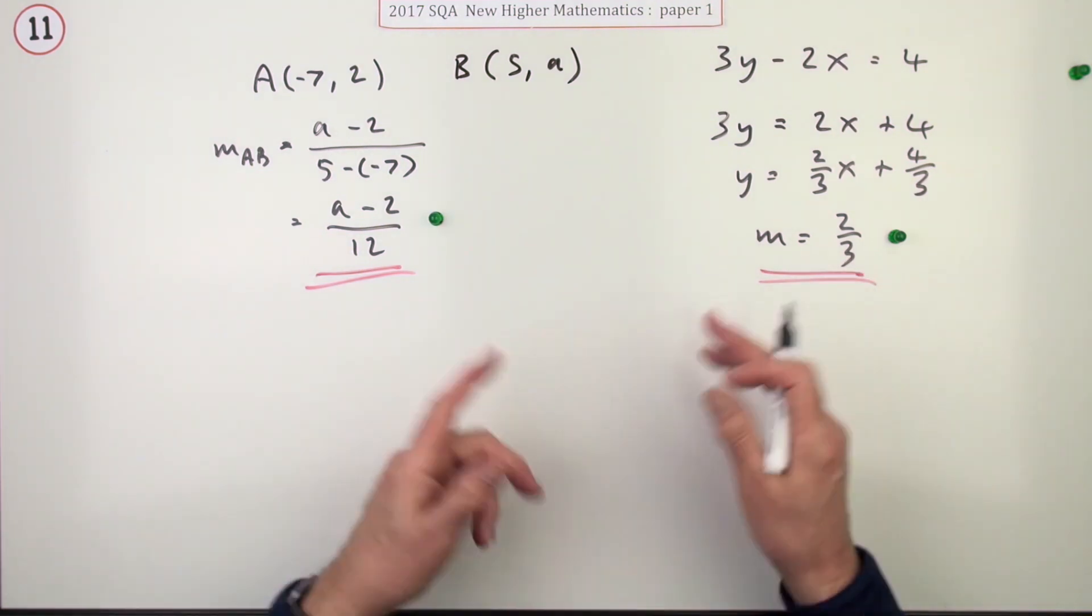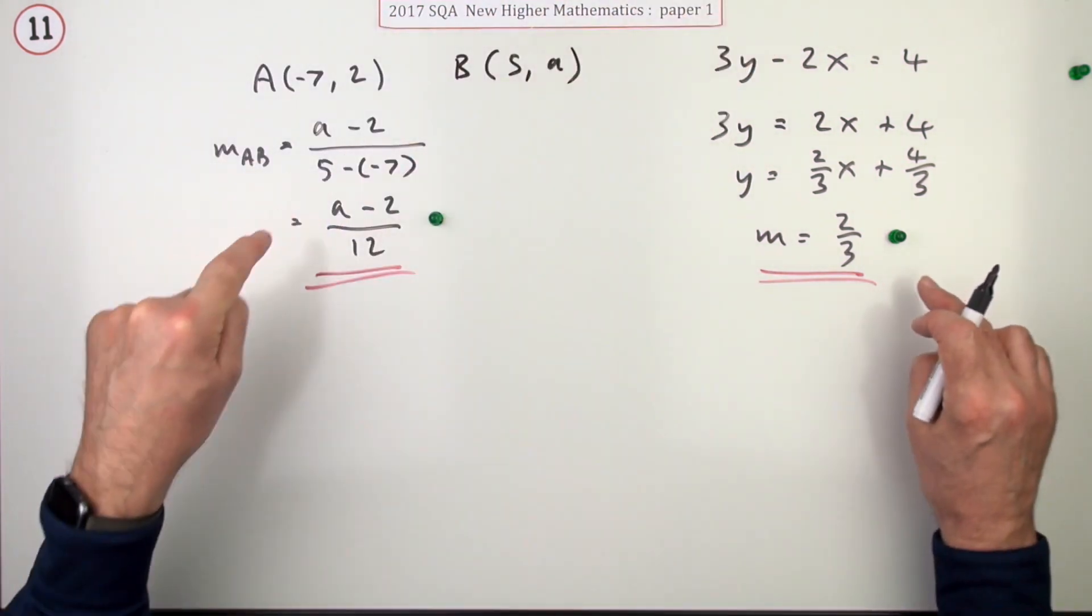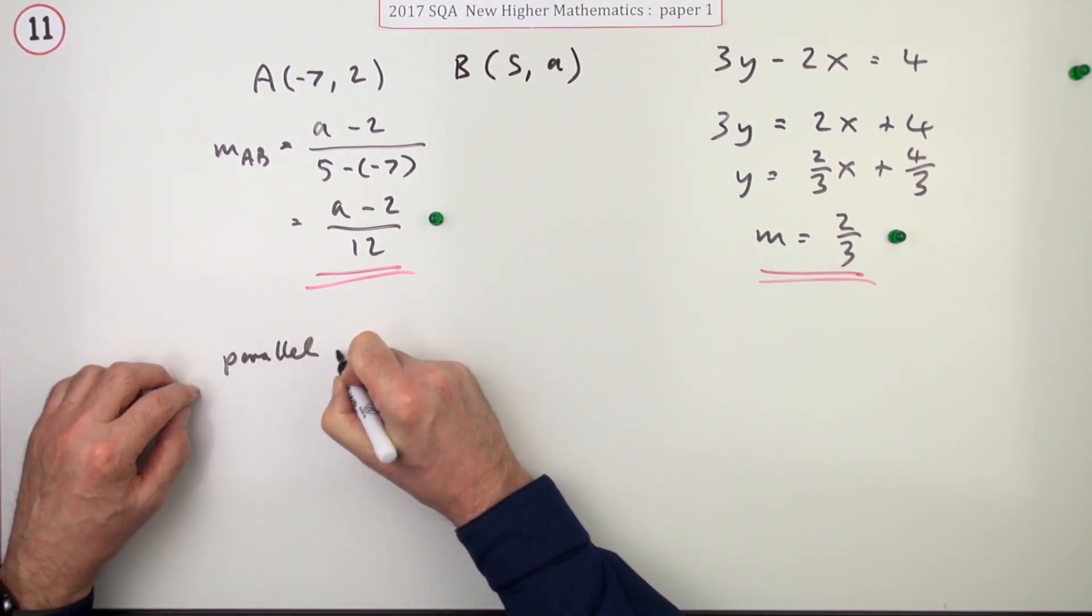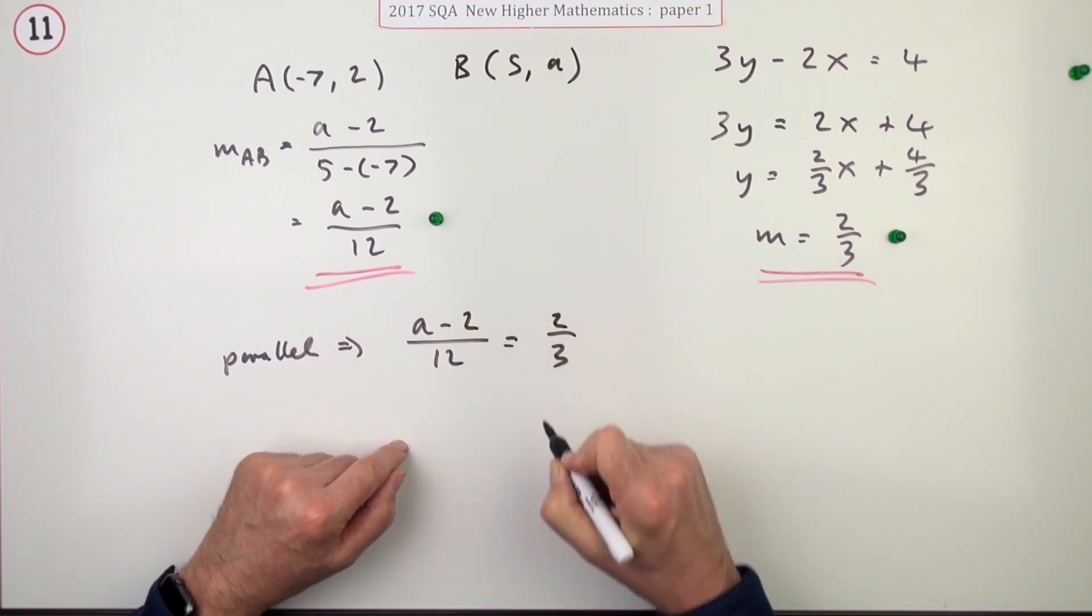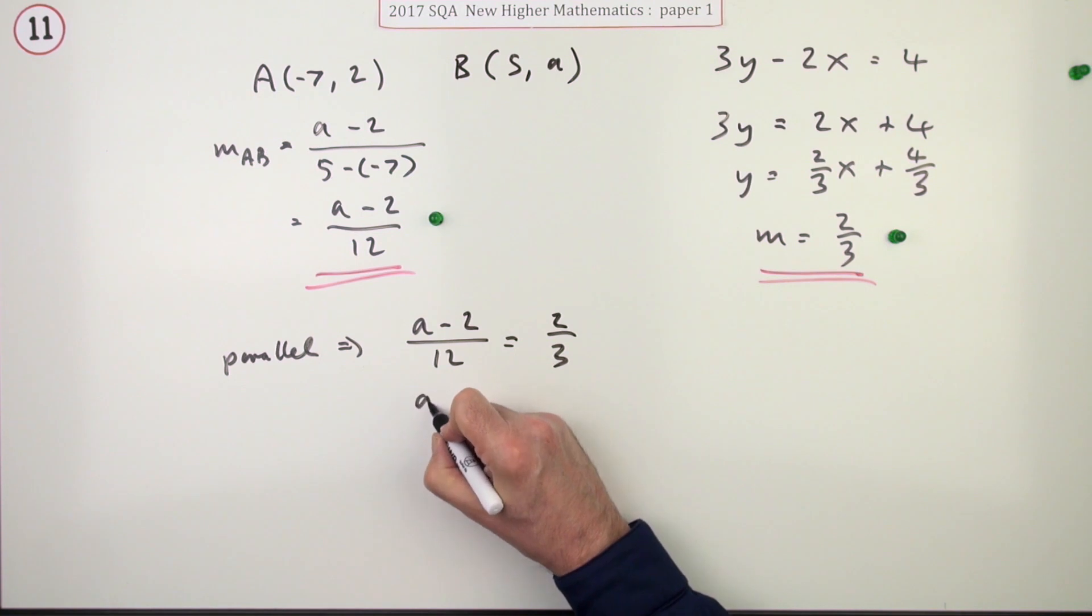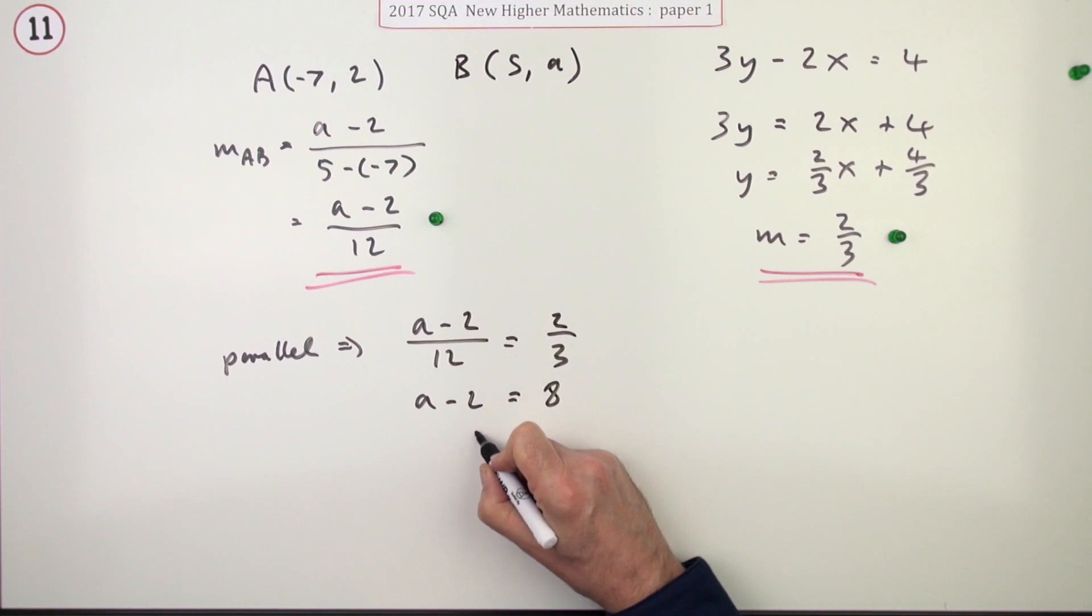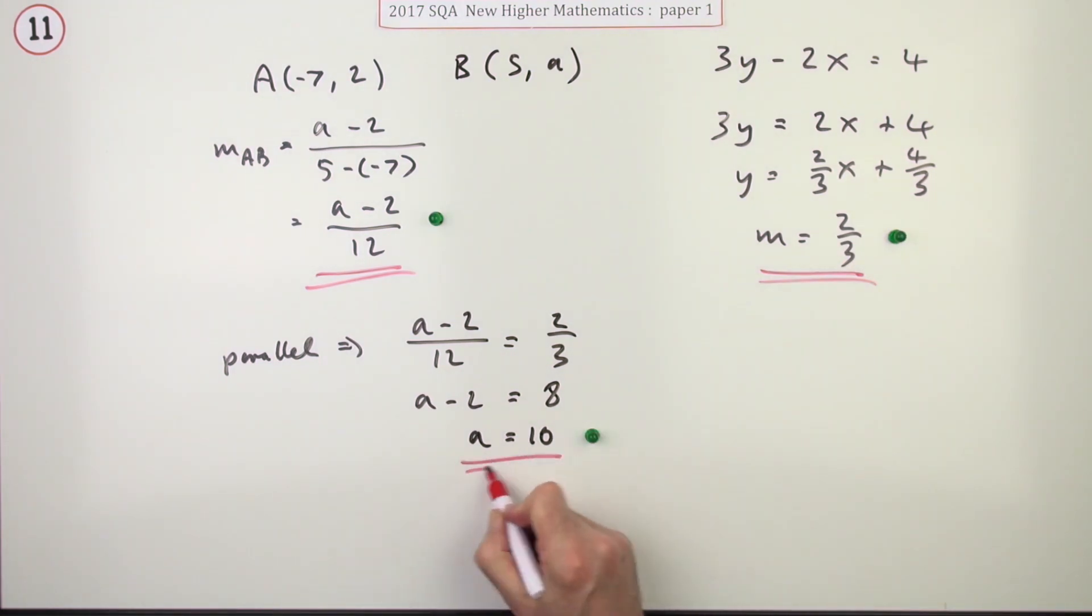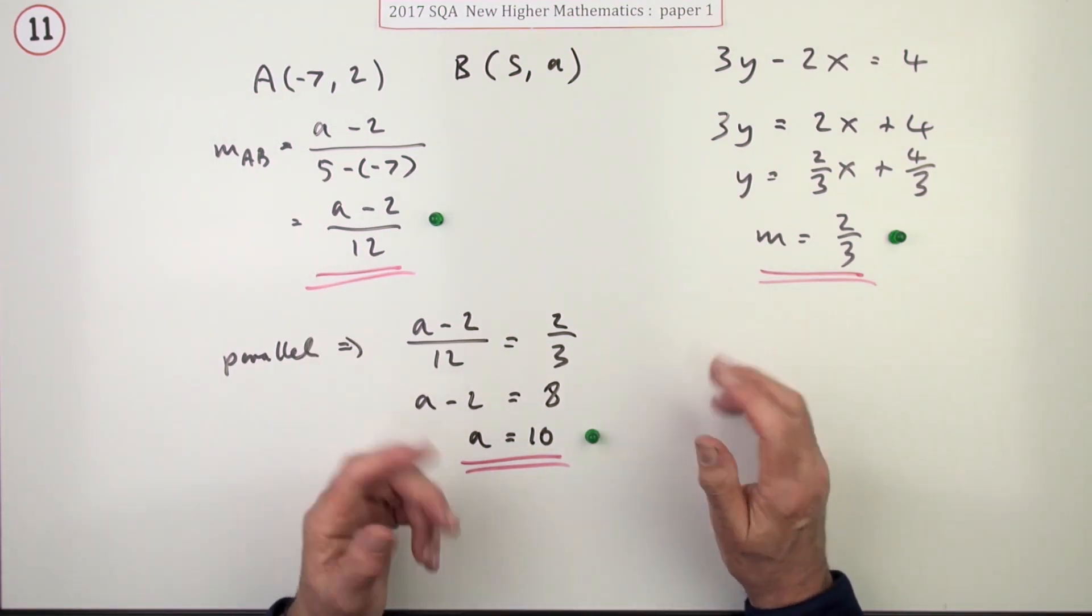So it's one for one and one for the other, whichever order you did them in. The important bit is: if that's parallel to this, these gradients are the same. Parallel means a minus 2 upon 12 must be the same as 2/3. So a minus 2 will be - take that 12 across - and that will come to 8. Take the 2 across and add it, and that gives you 10. There's the final mark. Fairly straightforward, so there's not much to comment on as far as the mark scheme goes.